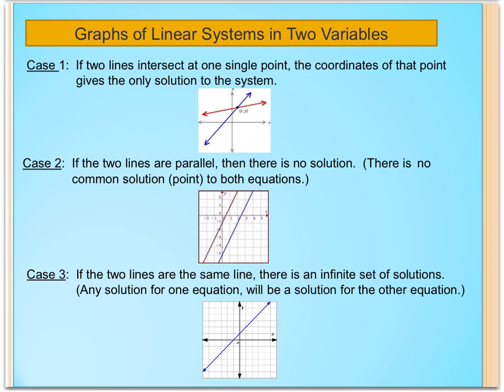When finding solutions to the system of equations, you will come upon three cases. Case 1: If two lines intersect at one single point, the coordinates of that point gives the only solution to the system.